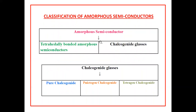Amorphous semiconductors can be classified as tetrahedrally bonded amorphous semiconductors and chalcogenide glasses. Chalcogenide glasses are further divided into three categories: pure chalcogenide, pnictogen chalcogenide, and tetragen chalcogenide.